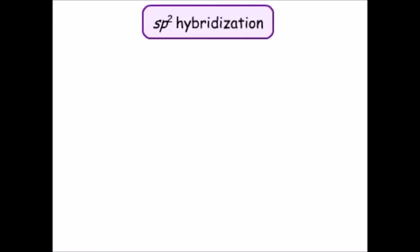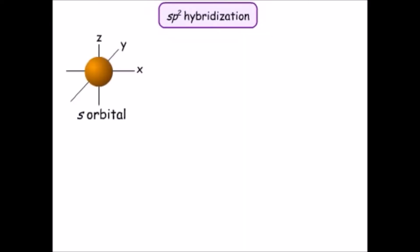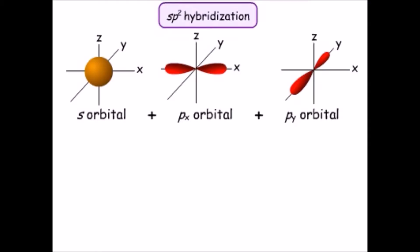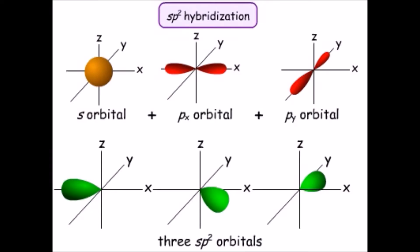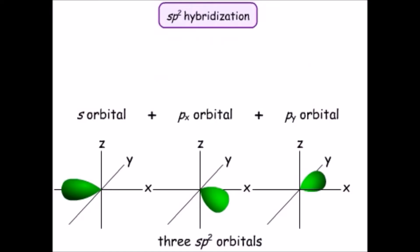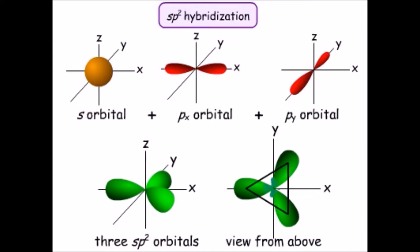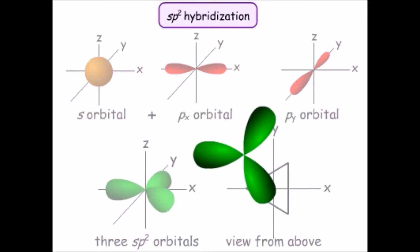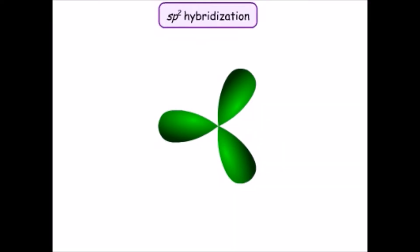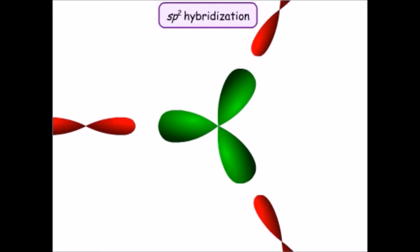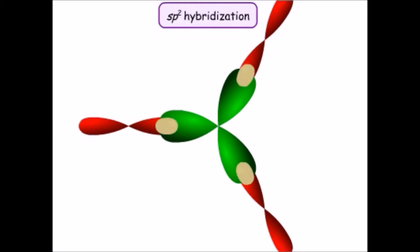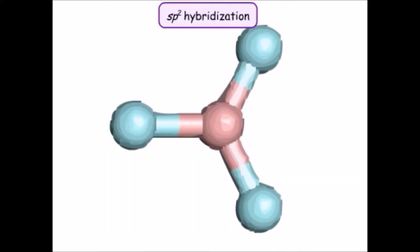The SP2 hybrid orbitals are formed using an S orbital, a PX orbital, and a PY orbital. There are three hybrid orbitals, the same as the number of contributing orbitals. These three SP2 orbitals, when viewed from above, look like a leaf with three lobes. To make the boron trifluoride molecule, viewed from above the plane of atoms, a boron atom with three SP2 hybrid orbitals combines with three fluorine atoms. A P electron from each fluorine atom pairs up with an electron in an SP2 hybrid orbital in the boron atom, placing all four atoms of the molecule in one plane.